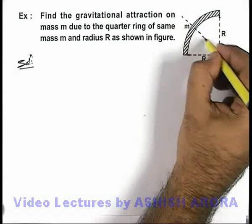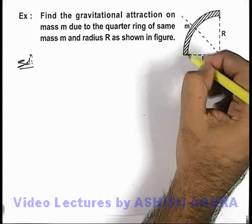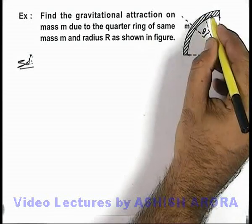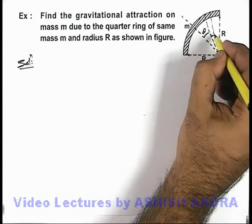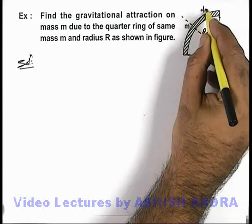So we consider an element on this ring which is located at an angle theta from its angle bisector, which is having an angular width d-theta, and say this elemental mass is dm.